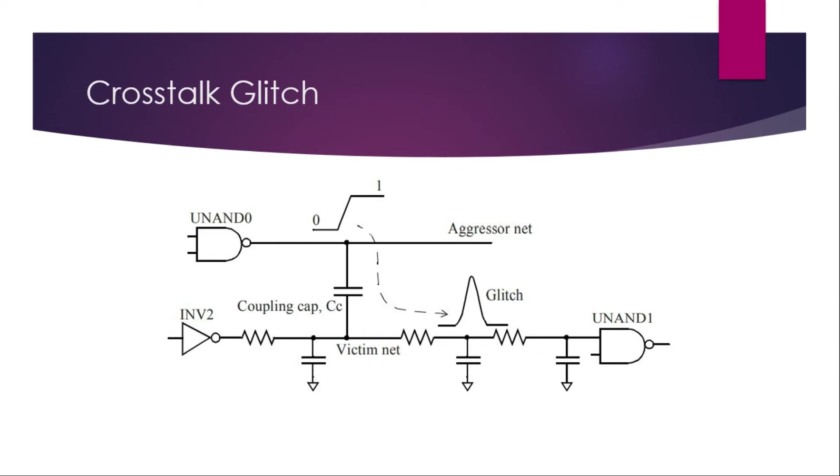The NAND output, which raises from 0 to 1, is transferred to the second net which is below. The one which is switching very fast and whose signal gets transferred to the other net, that net is called aggressor net. The one which is affected by the noise is called victim net. The one who creates problem is called aggressor and one who becomes a problem is actually a victim.